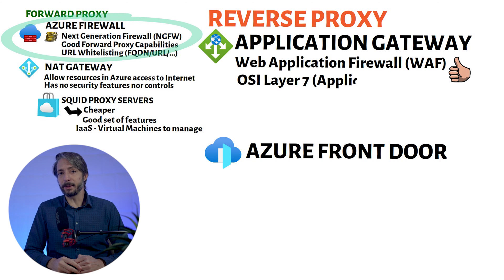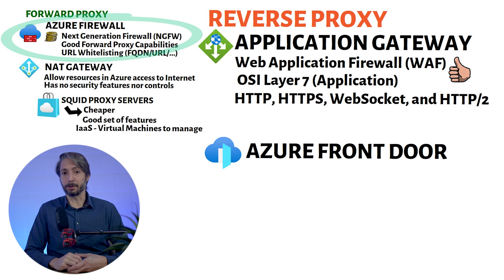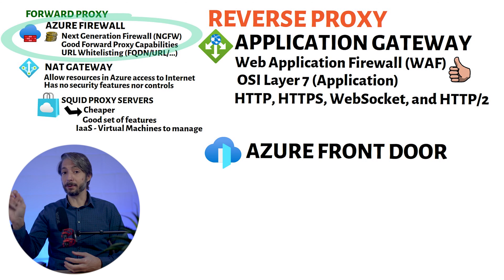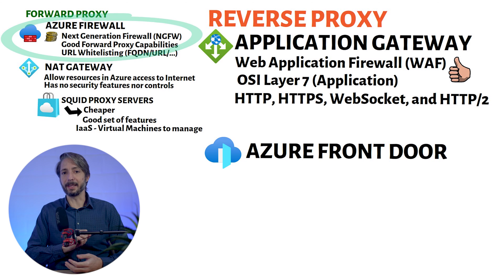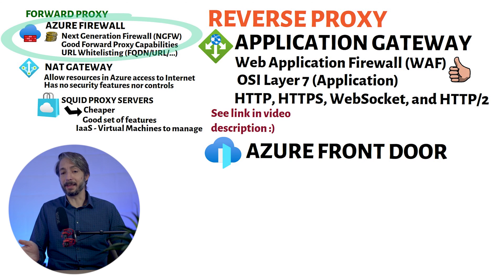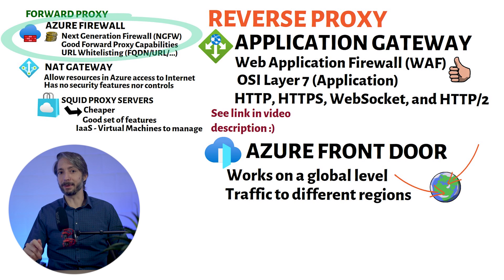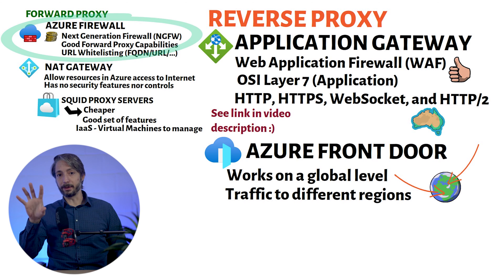The Application Gateway works on OSI layer 7, with support for HTTP, HTTPS, WebSocket, and HTTP/2 protocols. As a reverse proxy, you can send traffic to different backends depending on the URL they want to visit. I have a separate video regarding the Application Gateway, so check out the description below for the link. The other service, Azure Front Door, can also act as a reverse proxy. It offers similar functionality as Application Gateway, but it works more on a global level — it can act as a reverse proxy and send traffic to different regions. That's in stark contrast with Application Gateway, which is more focused on a regional service.